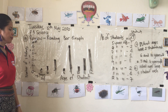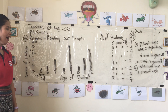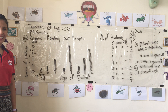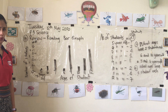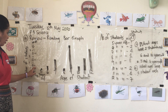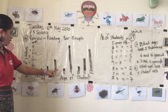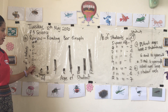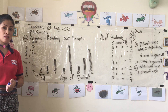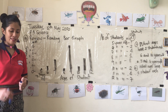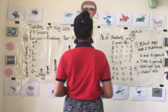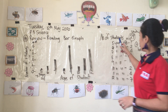How about how many students are eight years old? There is only one. Okay, so that's very easy, right?